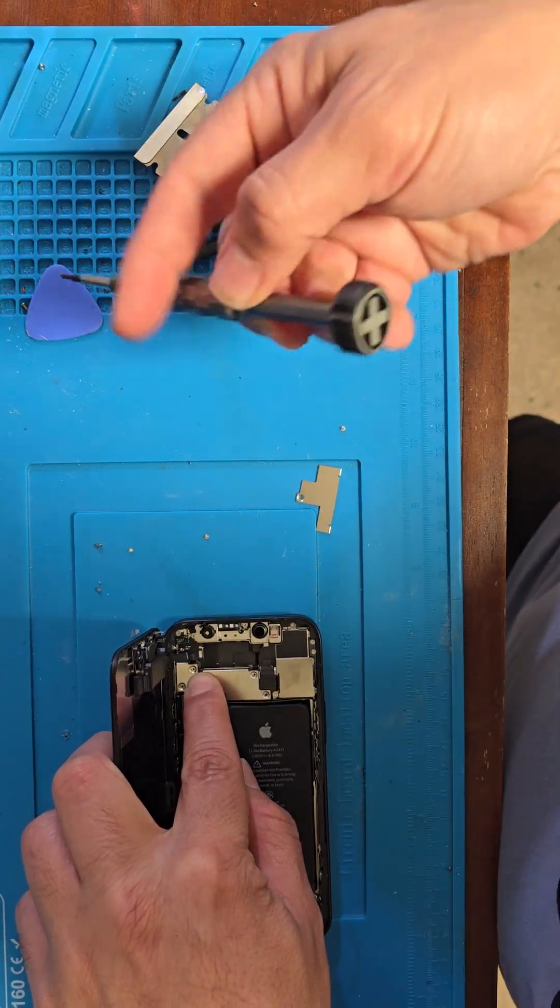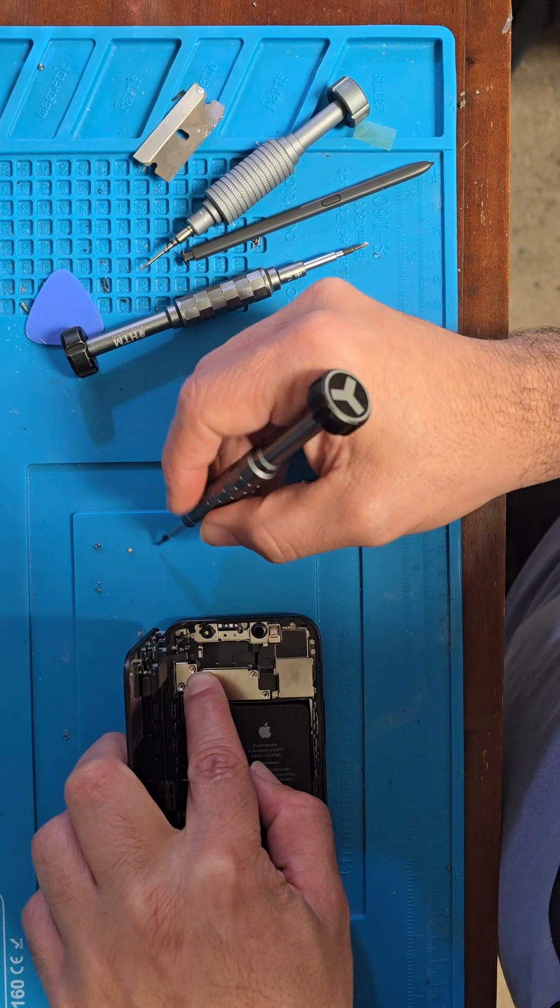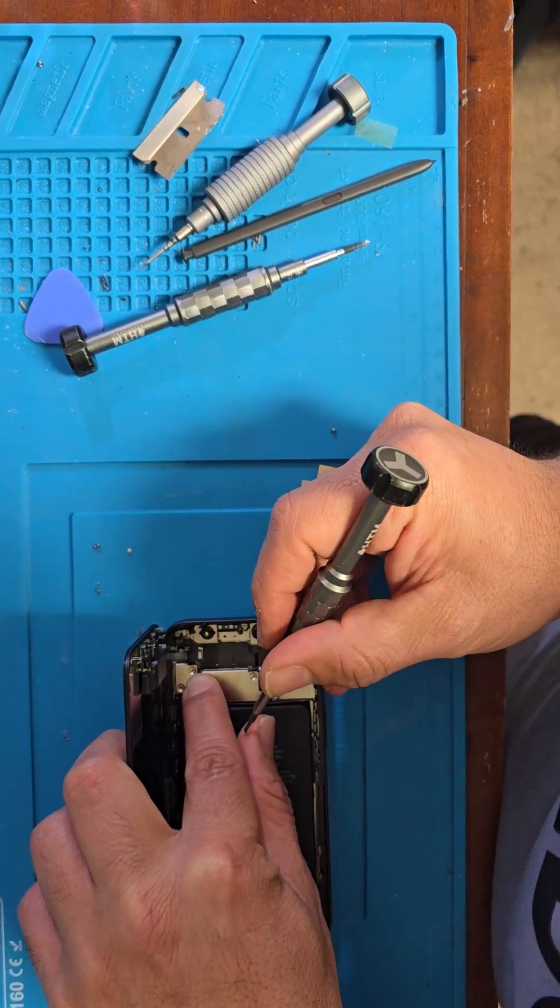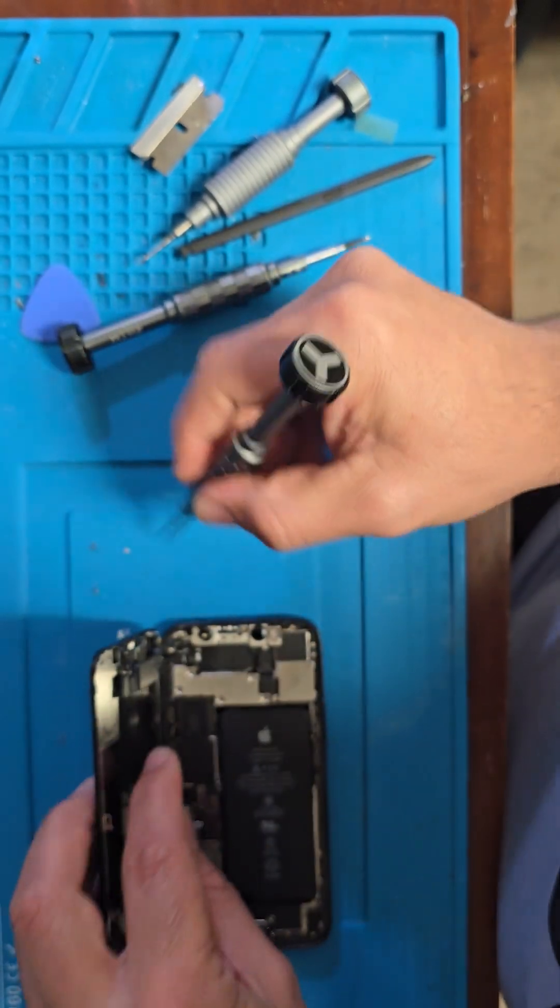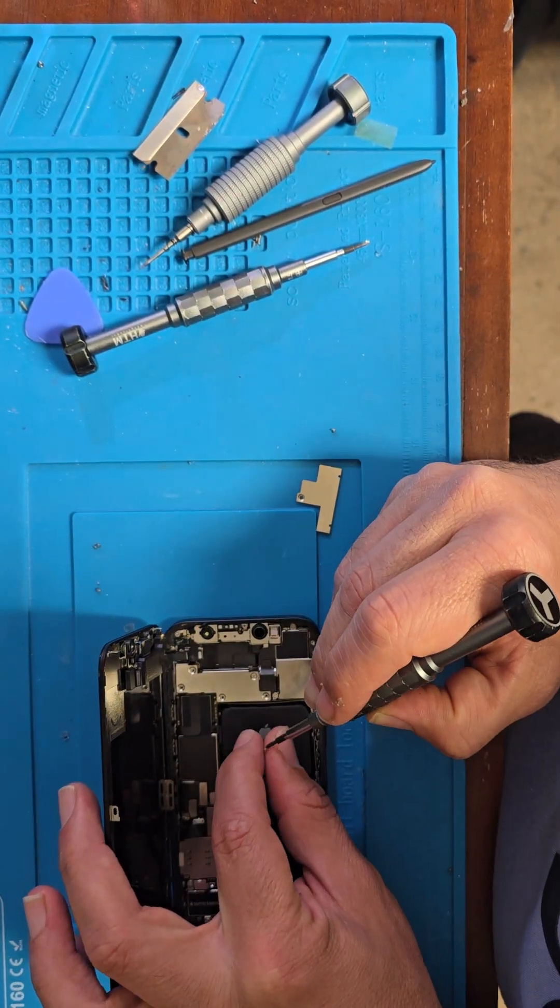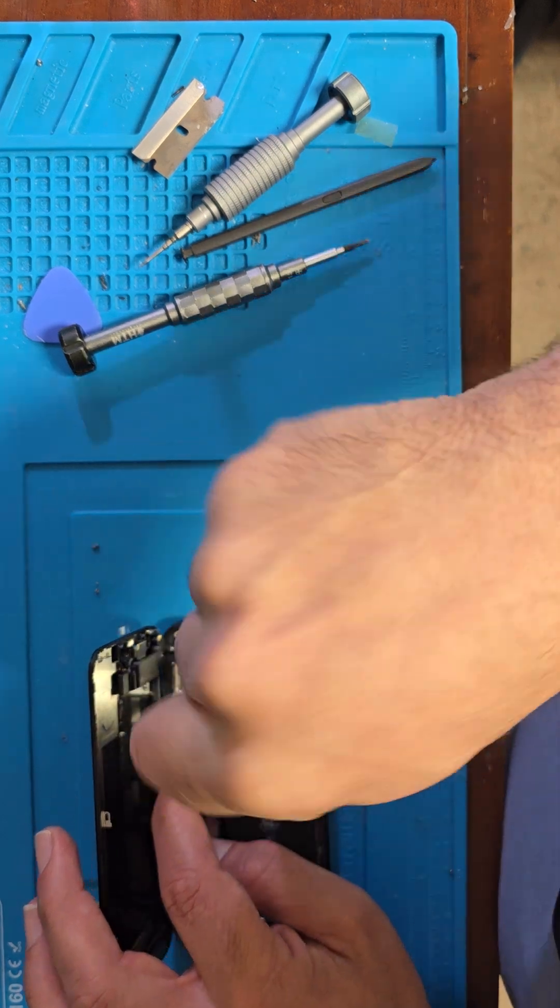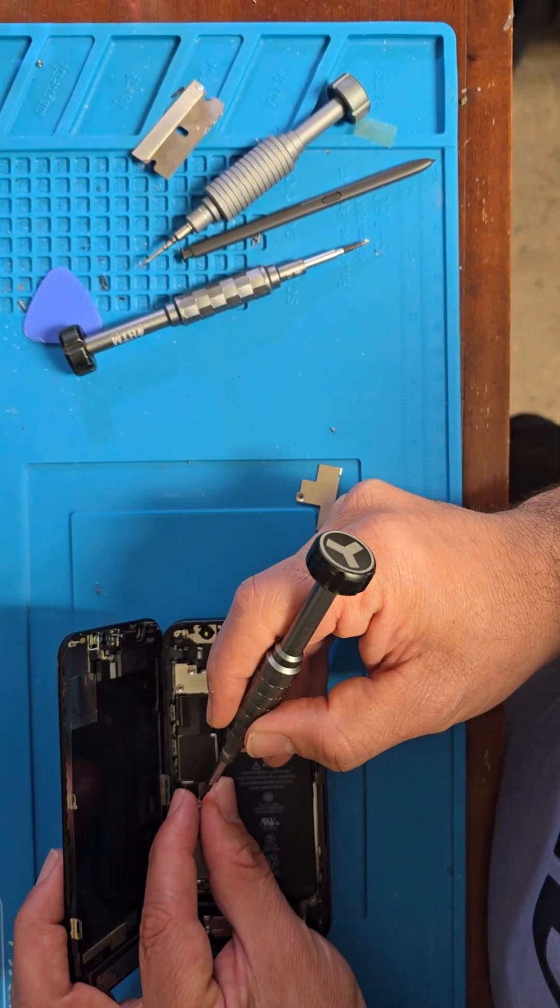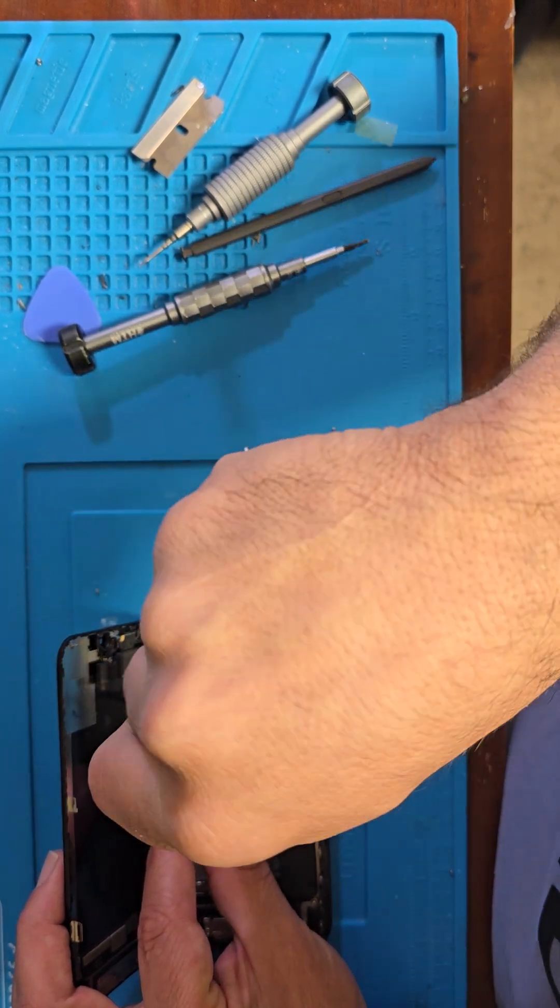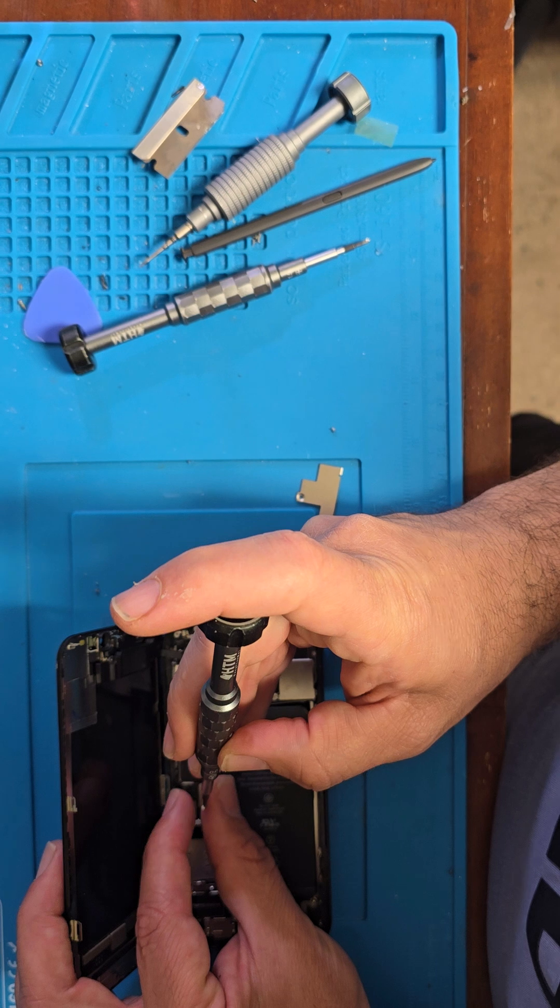We put back the tray. We need the other screwdriver, this one. We have about five screws here.